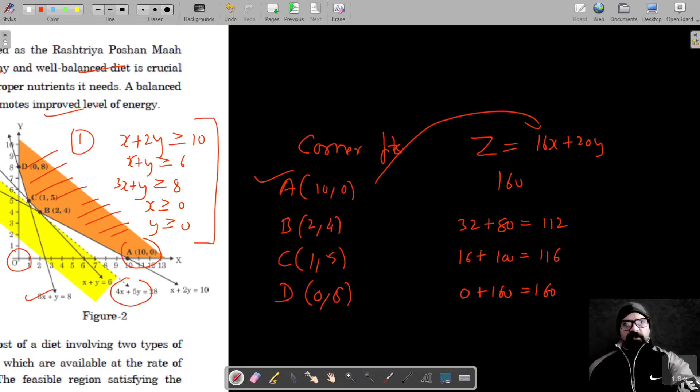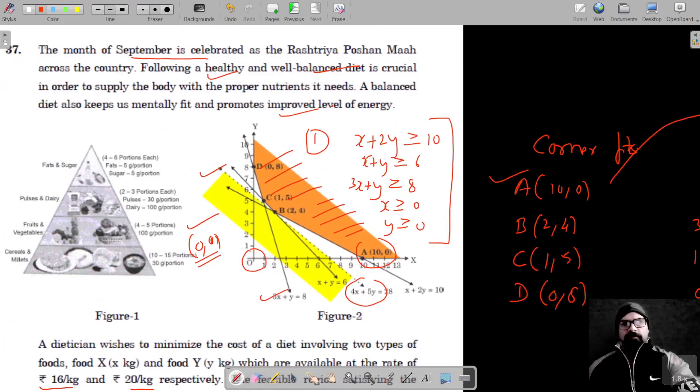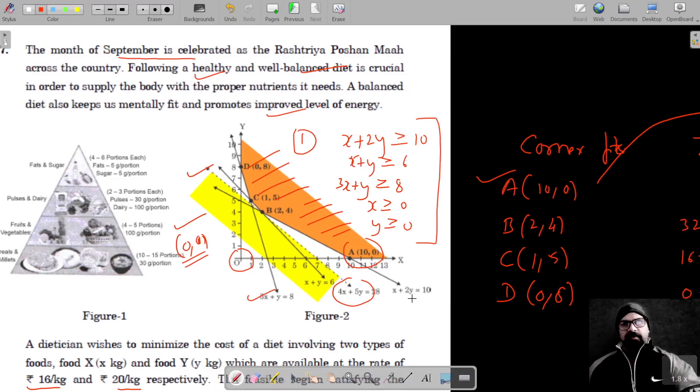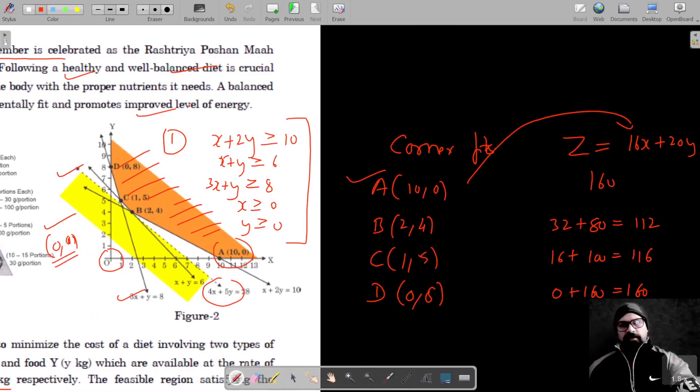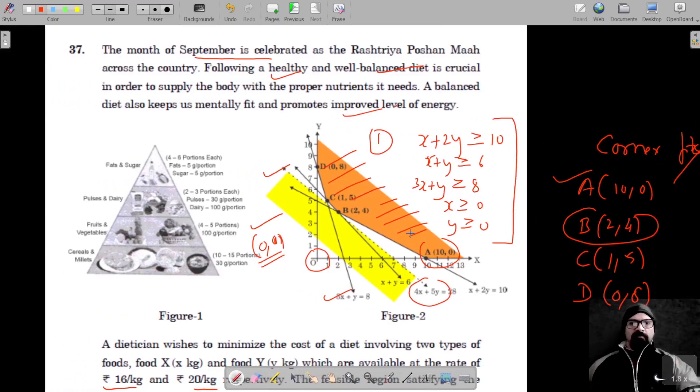So, 116, 112, 116, and 160. Now the minimum cost is Rs 112, so minimum cost is Rs 112.